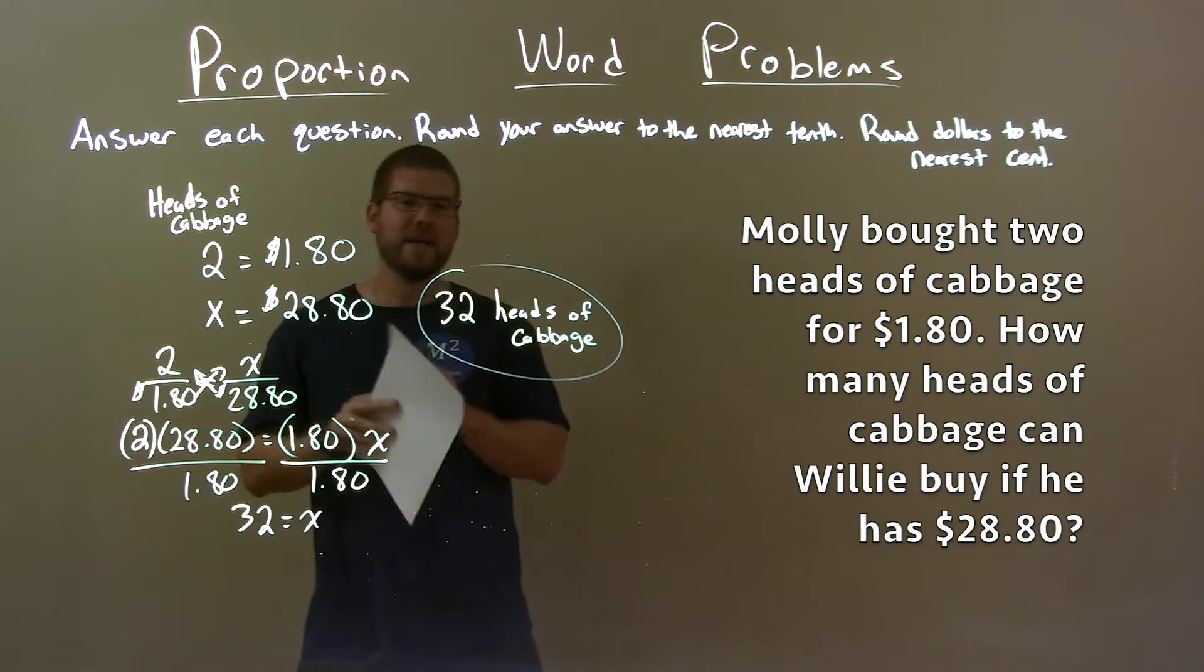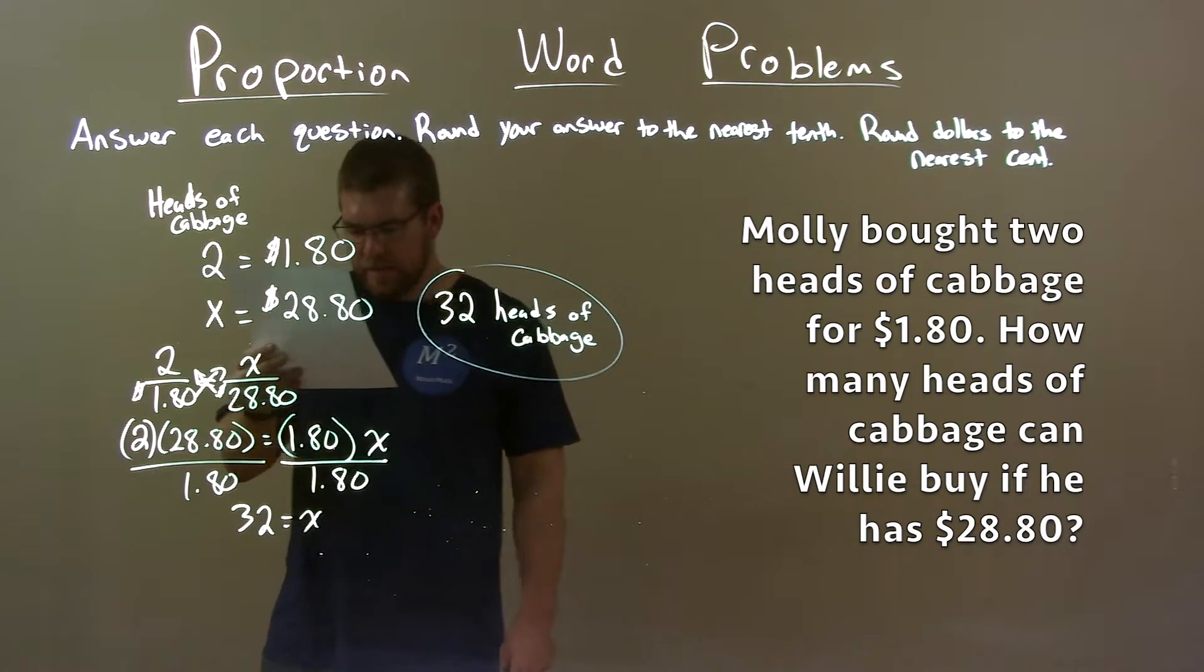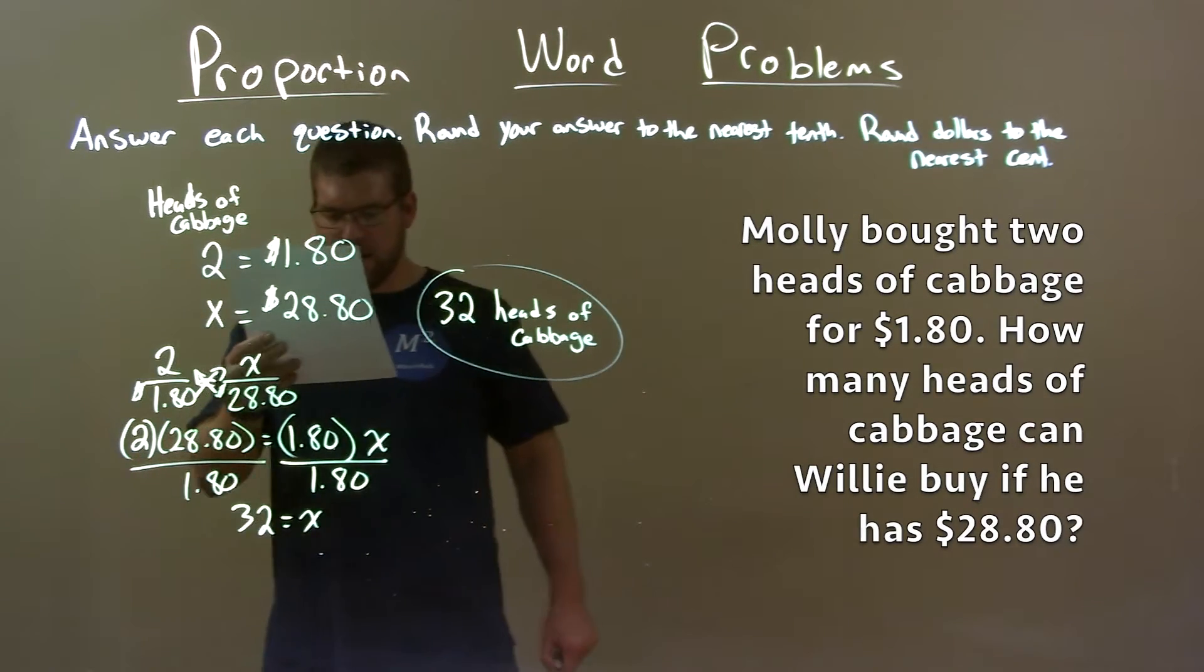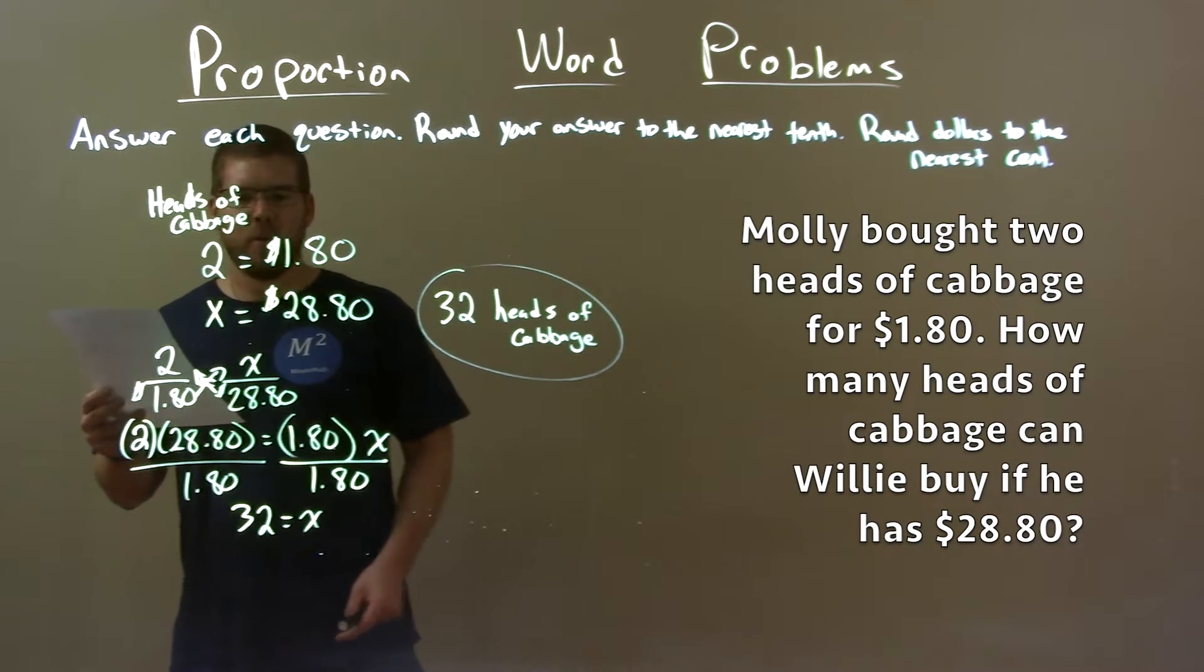So quick recap. We're given the word problem: Molly bought two heads of cabbage for $1.80. How many heads of cabbage can Willie buy if he has $28.80? Well, first thing I want to do is set up a proportion.